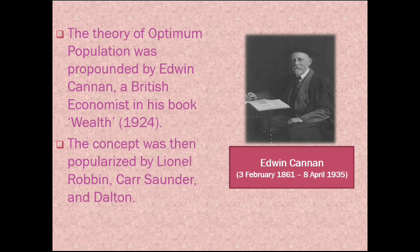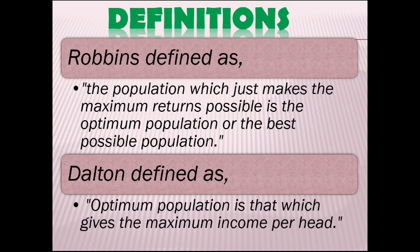Edwin Kannan propounded the optimum population theory and mentioned this in his book, Wealth. The concept was then popularized by Leonel Robin, Karl Saunders, Dalton, and many more.